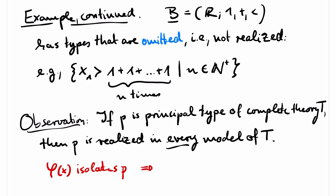Then the sentence exists x psi of x union T is satisfiable. And since T is complete, this sentence must be part of T. So every model satisfies this sentence. So every model has an element a such that psi of a, and a then realizes the type P.